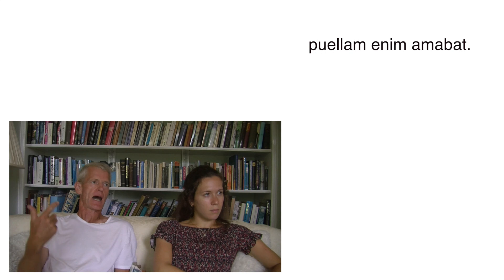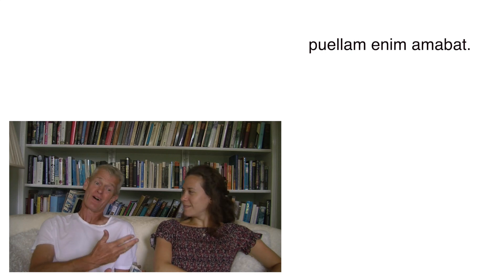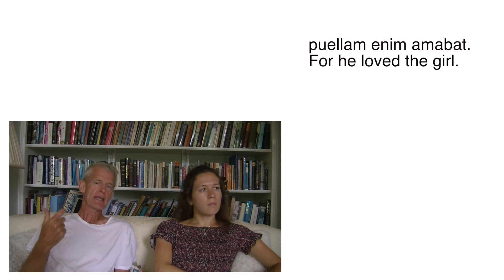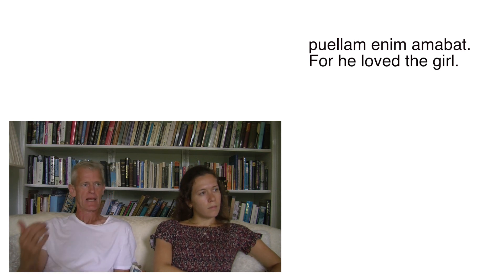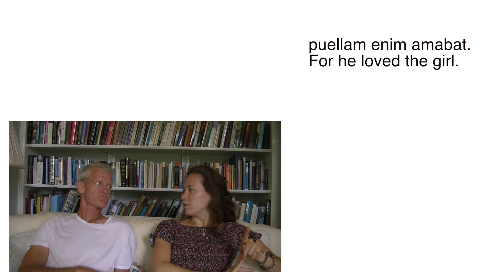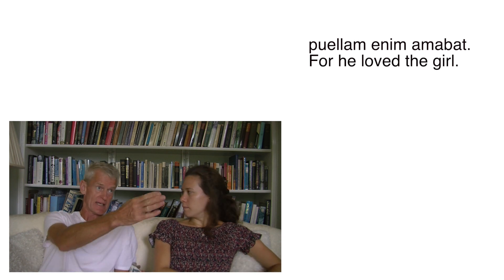'Puellam enim amabat.' For he loved the girl. Enim again explains the previous sentence. It's fine to translate it as 'because.' So: for/because he loved the girl. The accusative 'puellam' is used; later with pronouns we could say 'for he loved her,' or the Latin could say 'Flaviam' instead. Demonstrative pronouns will be covered in a future lesson.